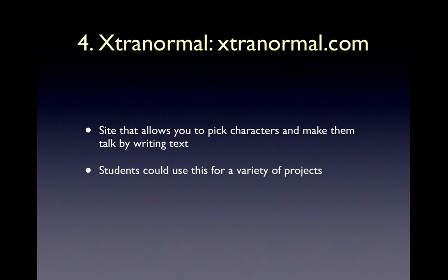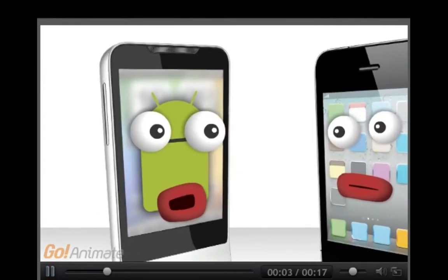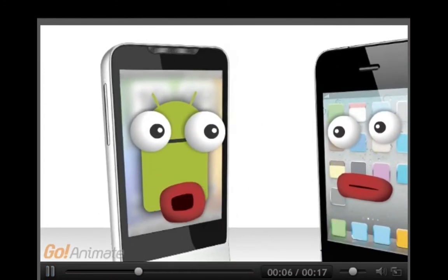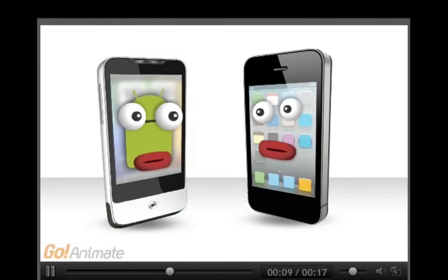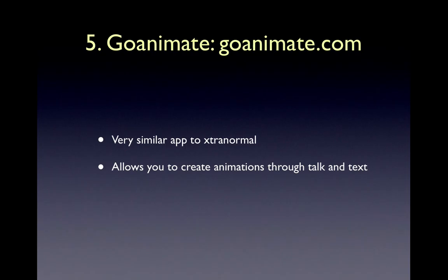The one issue with ExtraNormal is that about five years ago they had a Super Bowl commercial, became popular, and now it costs a little more than it did back then. Number five is GoAnimate. GoAnimate is very similar to ExtraNormal — it allows you to create animations through dialogue and text, but it's a little more on the free side.